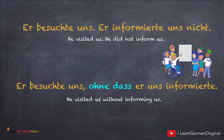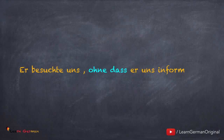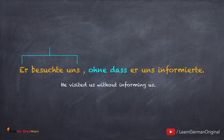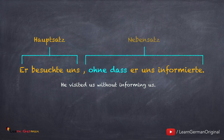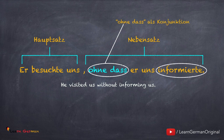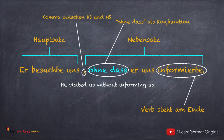So, whenever in the subordinate clause there is an action taking place that is not expected, then you will use ohne dass. Er besuchte uns, ohne dass er uns informierte. Er besuchte uns is the Hauptsatz; ohne dass er uns informierte is the Nebensatz. Die Konjunktion ohne dass steht am Satzanfang vom Nebensatz. Im Nebensatz steht das Verb am Ende; zwischen Hauptsatz und Nebensatz ist ein Komma.